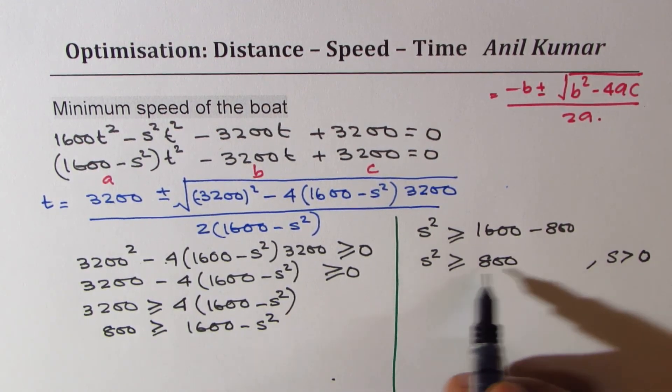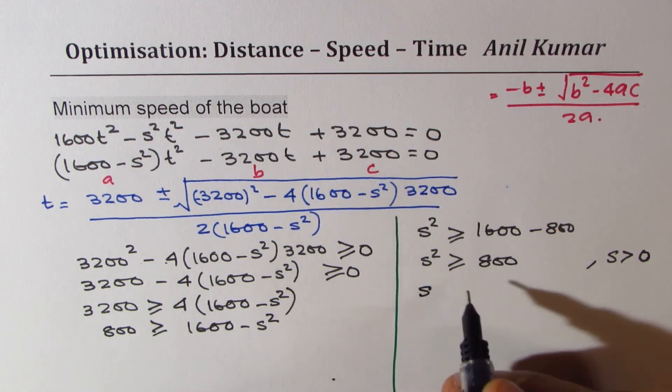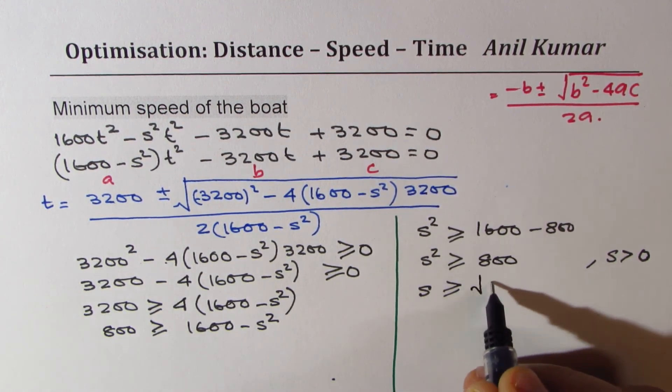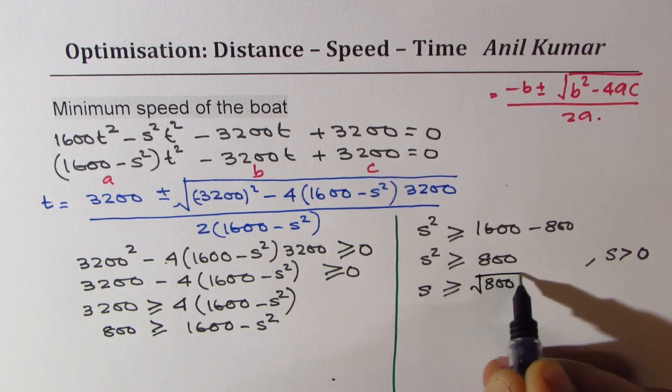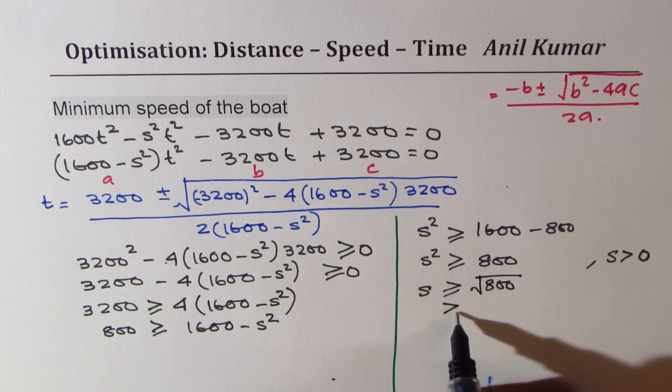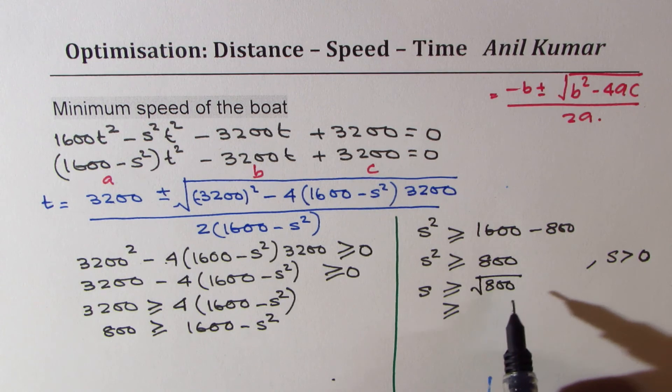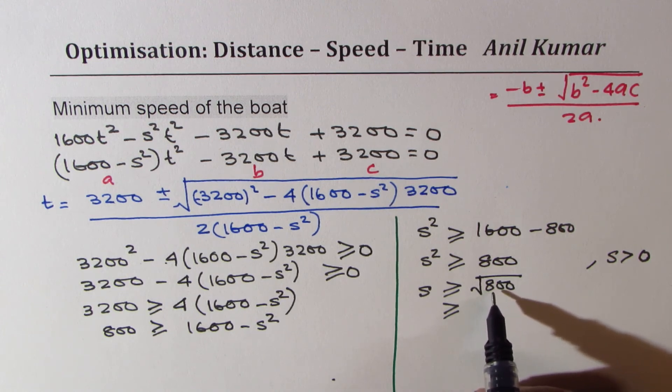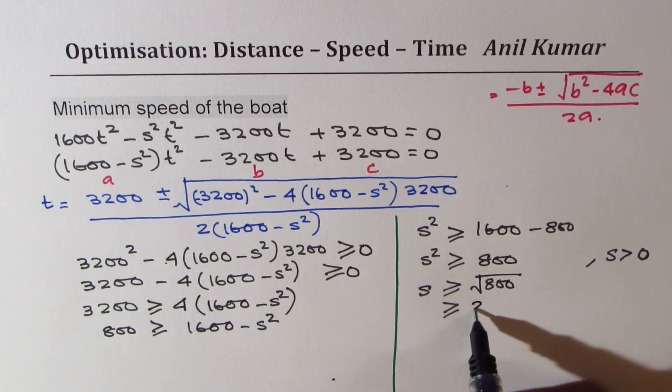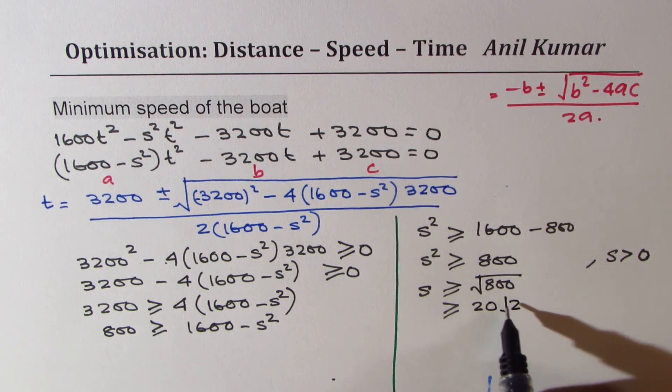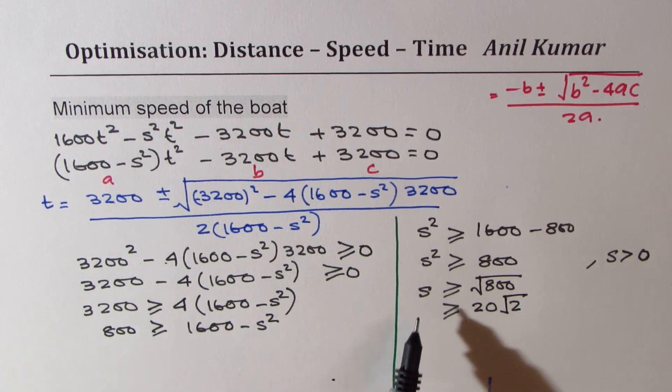S is always greater than 0, it's a positive quantity. Therefore, we could do square root and say that s is greater than or equal to square root of 800, which means it is greater than or equal to 20 square root 2.